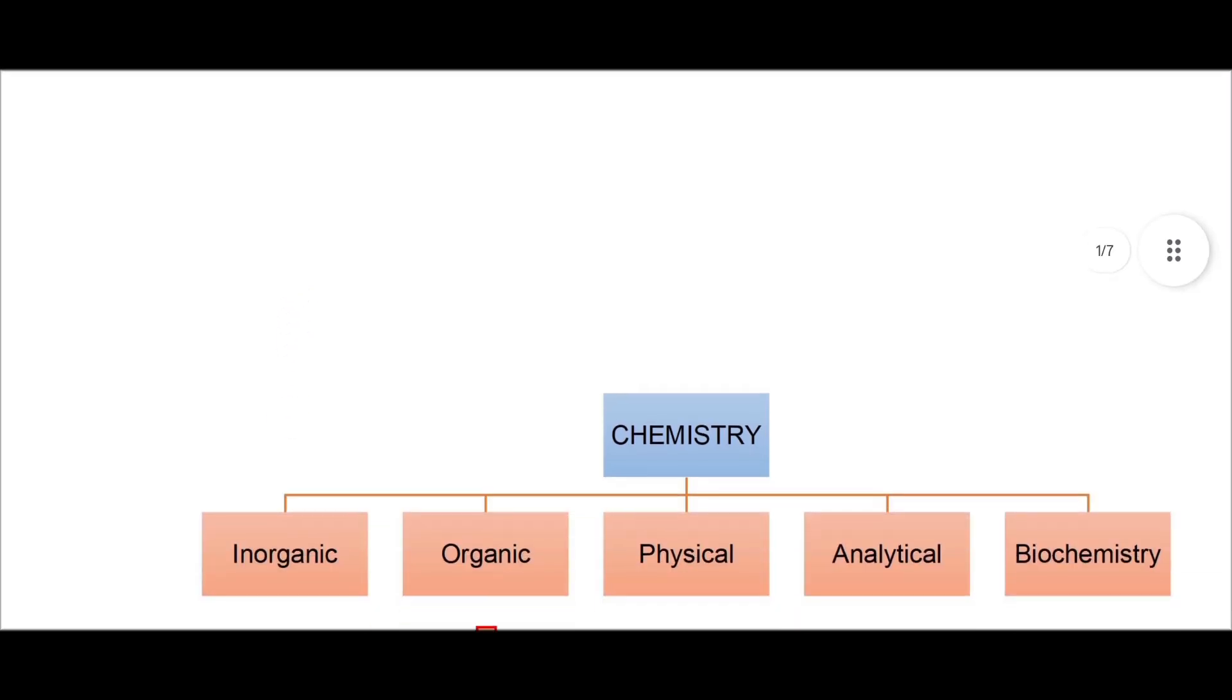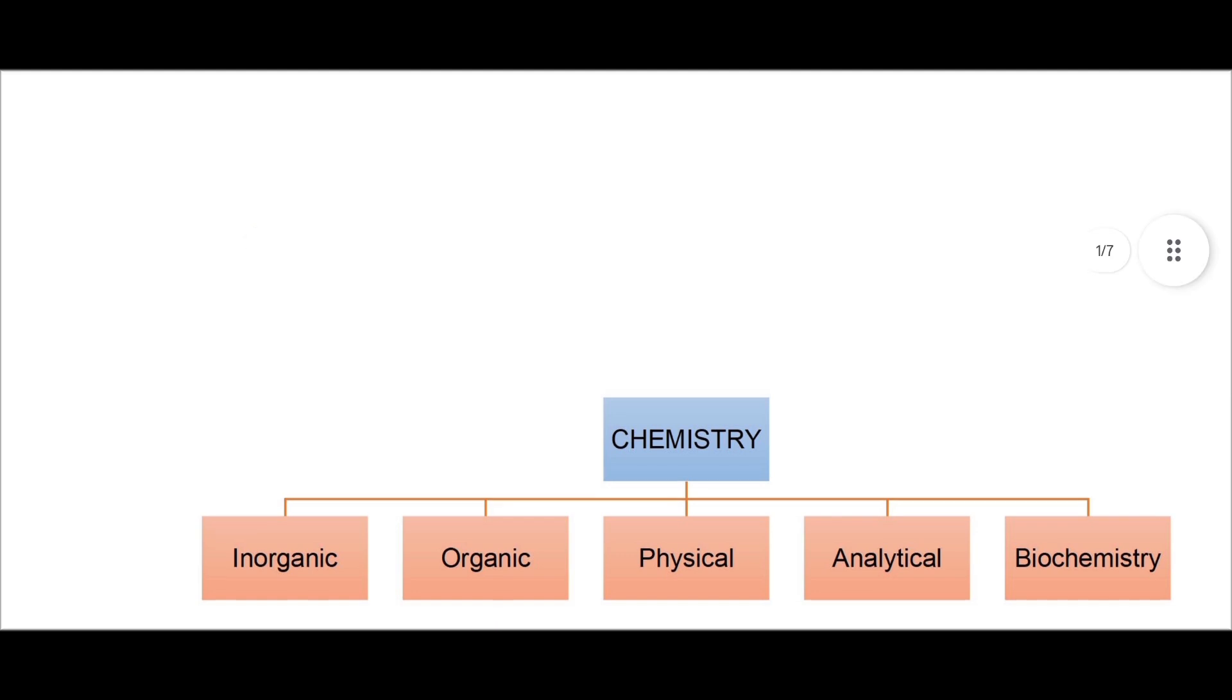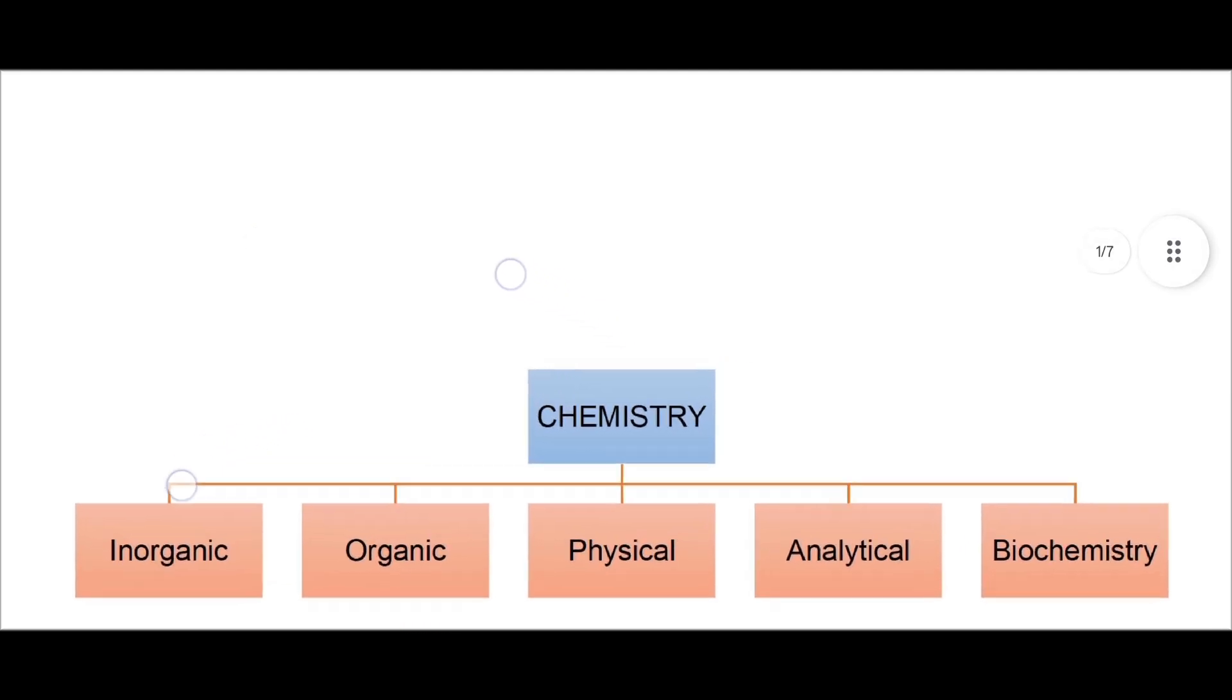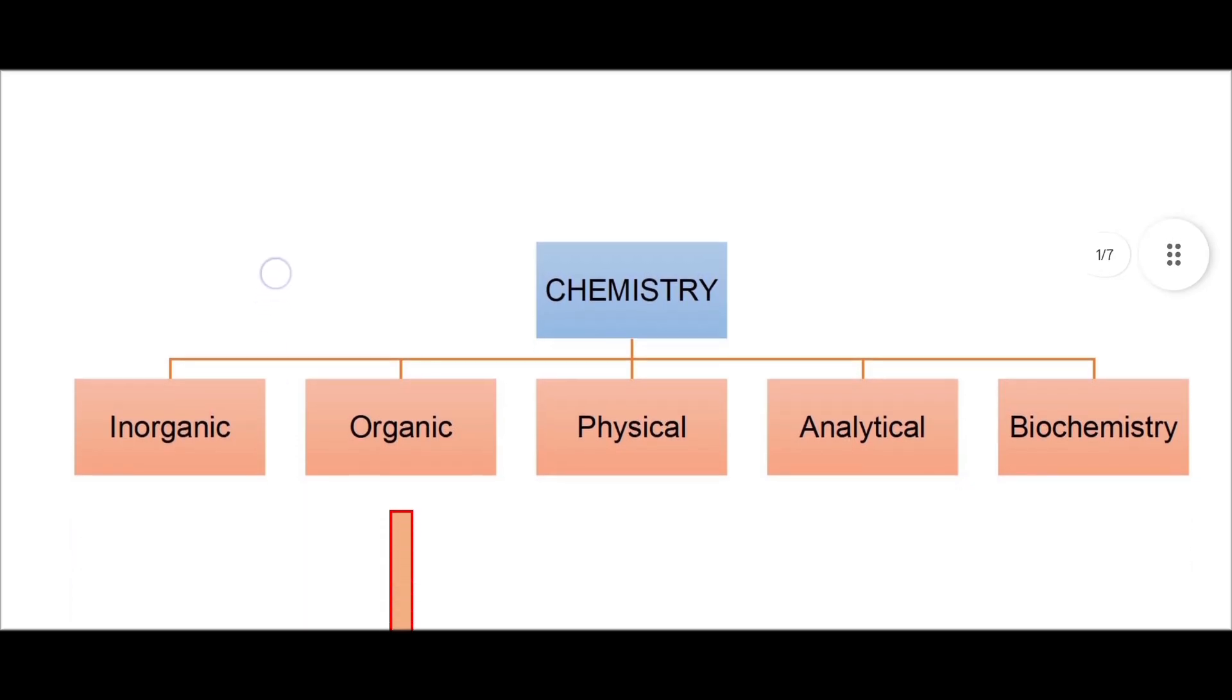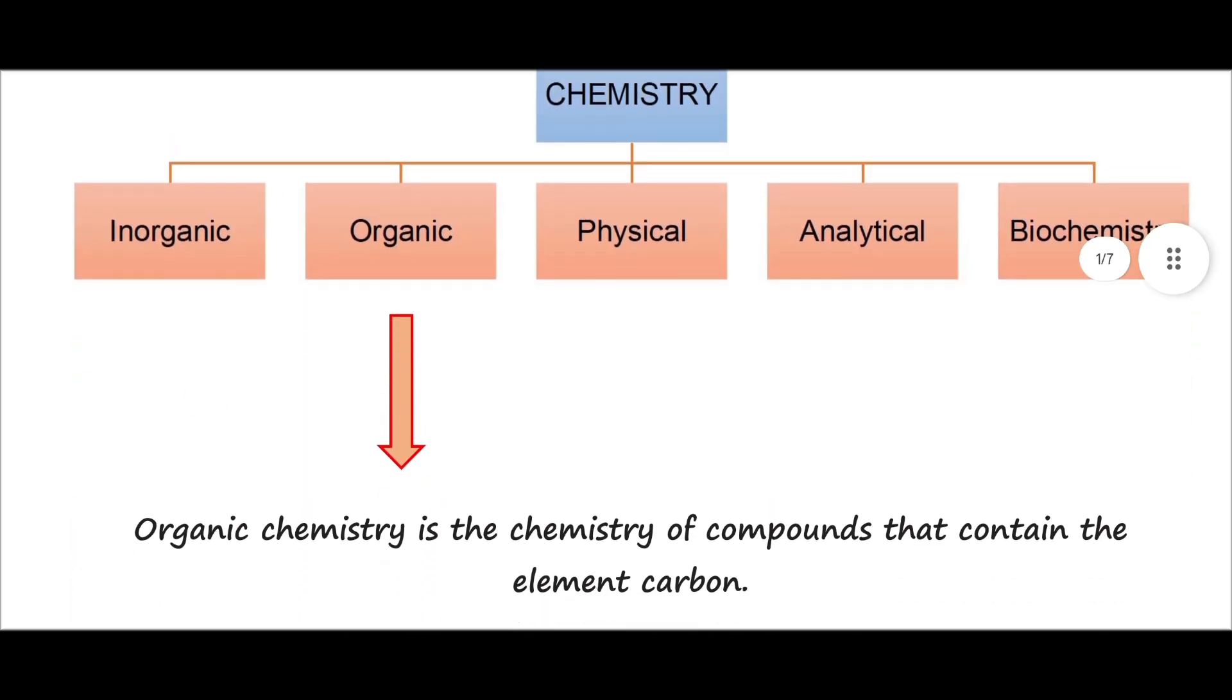First, we're going to see the five main streams into which chemistry is further divided. Chemistry is classified as inorganic chemistry, organic chemistry, physical chemistry, analytical chemistry, and biochemistry. Our particular interest lies upon organic chemistry, which is the chemistry of compounds that contain the element carbon.